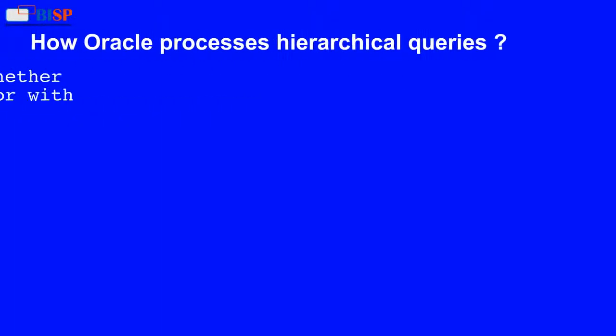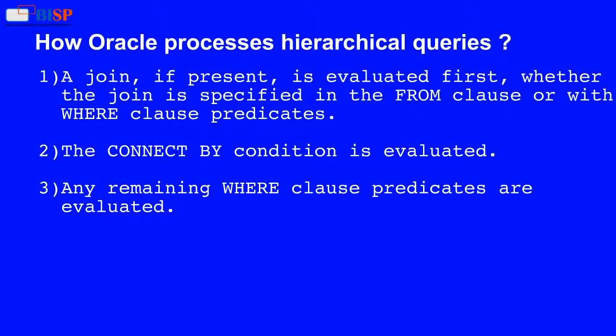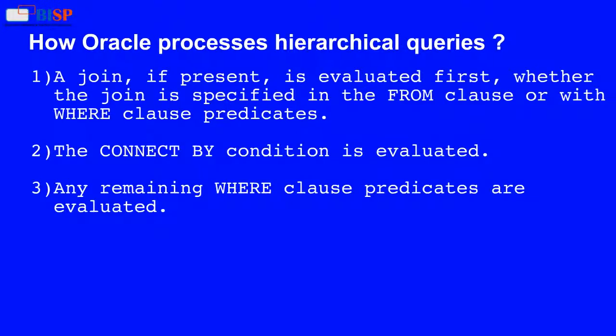How Oracle processes Hierarchical Queries: 1. A join, if present, is evaluated first, whether the join is specified in the FROM clause or with WHERE clause predicates. 2. The CONNECT BY condition is evaluated. 3. Any remaining WHERE clause predicates are evaluated.